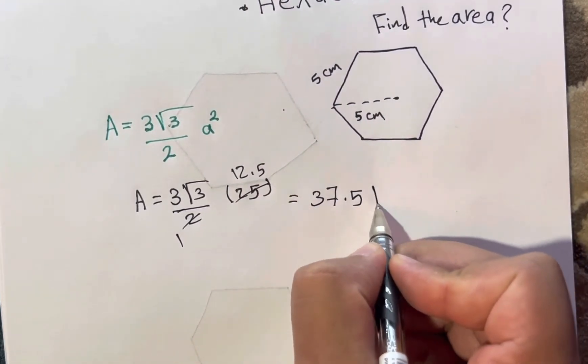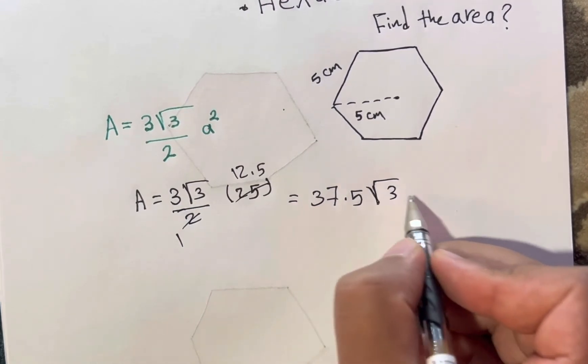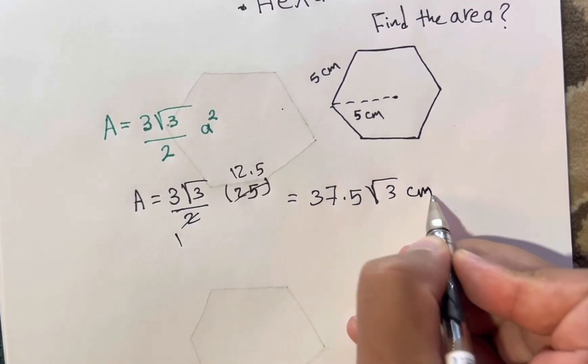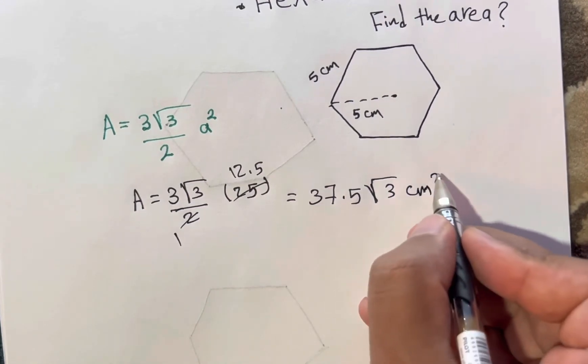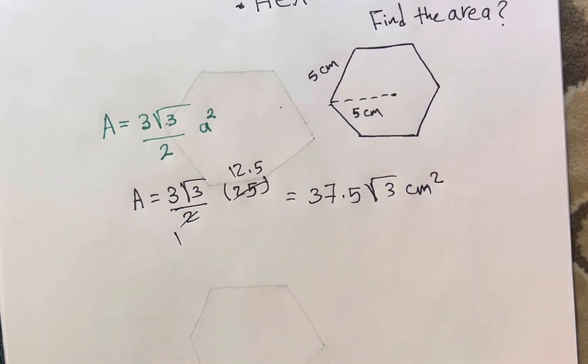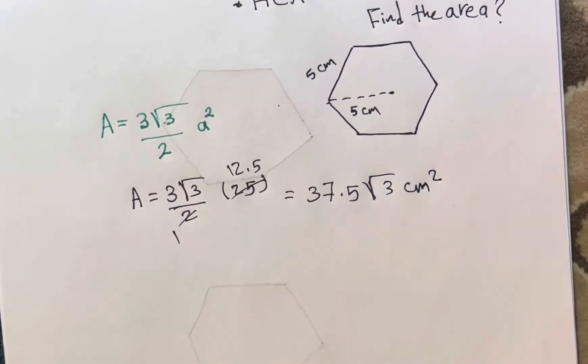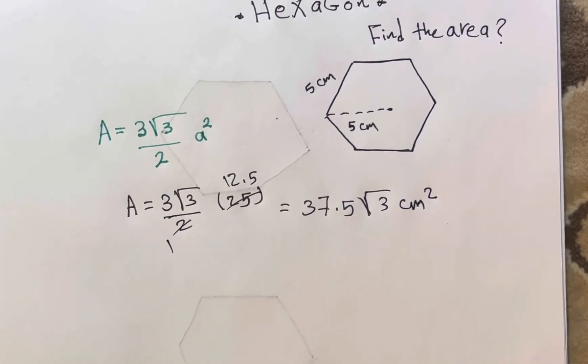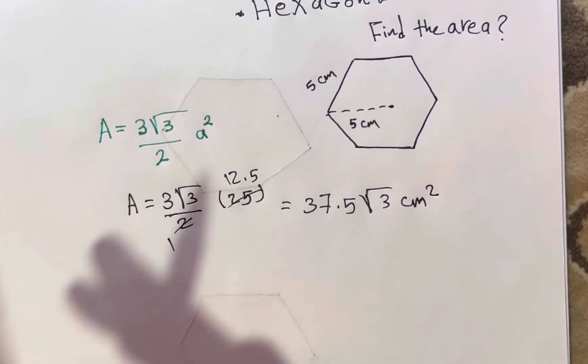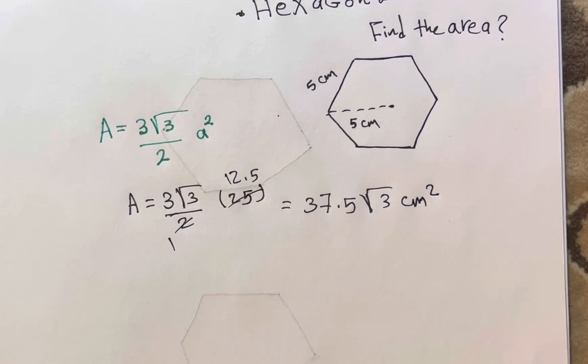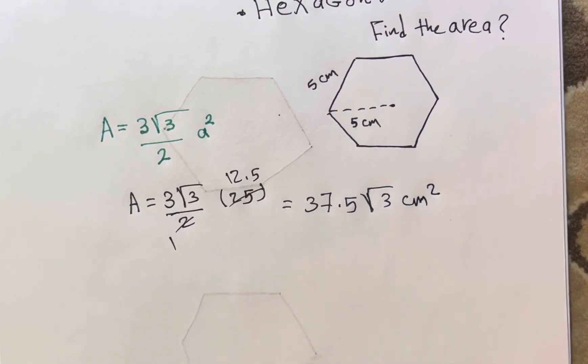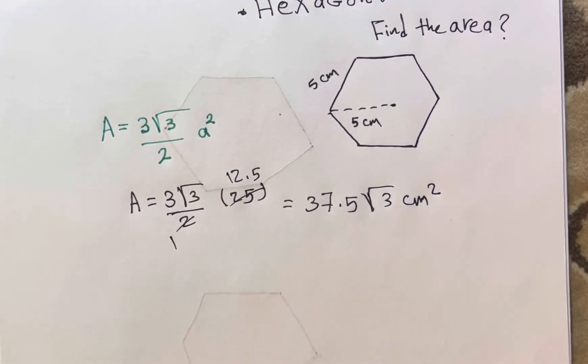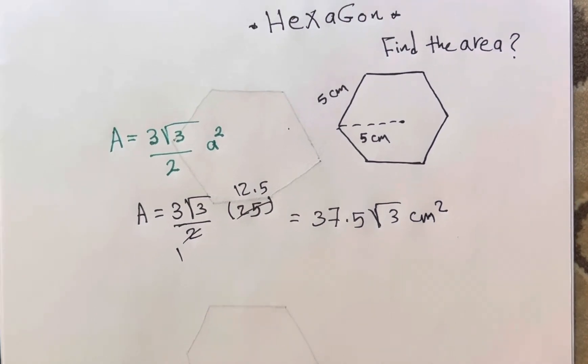So remember this one always: if you have a hexagon and you need to find the area, use this formula—A equals three square root of three over two, then multiply by a squared.